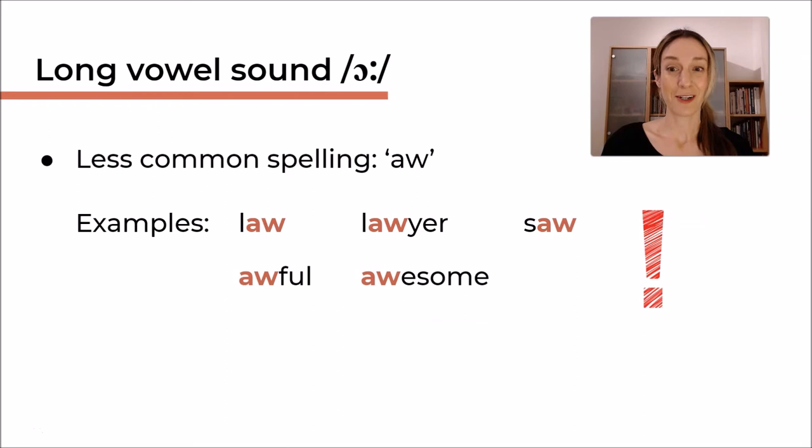Let's have a look now at some, I wouldn't call them exceptions, these are just less common spelling patterns. So here we have AW, looks a little bit like the AU that we just had, and the sound is the same, it's a long /ɔː/ again. For example, law, lawyer, saw, awful, meaning terrible, and awesome, meaning very good. They look very similar in spelling, they sound similar, they have a very different meaning though. I think you are repeating those words, I'm imagining that, and I think you're doing well.